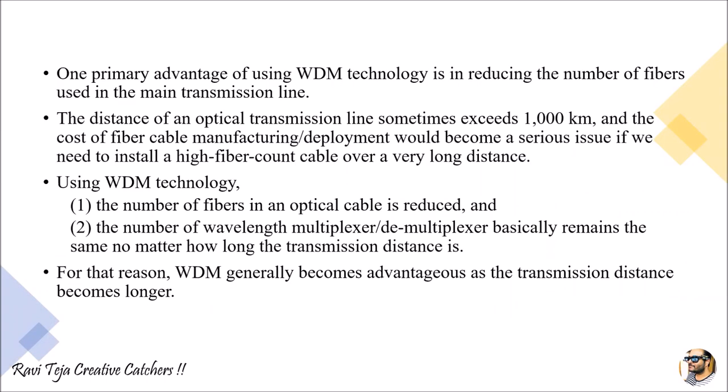One of the primary advantages of using WDM technology is reducing the number of fibers used in the main transmission line. Using a single optical fiber cable, we can transmit multiple transmitter signals over hundreds and thousands of kilometers. If we used multiple optical fiber cables for multiple transmitters, the manufacturing would be complex and the cost of fiber installation would increase. Using multiplexing and demultiplexing based on different wavelengths with a single optical fiber reduces cost and manufacturing burden significantly.